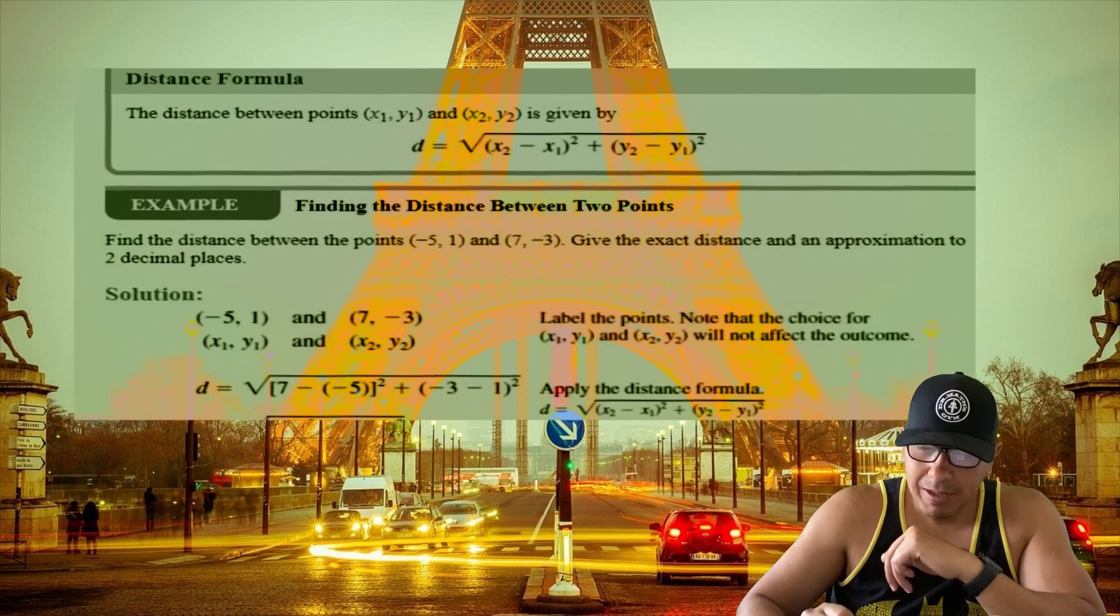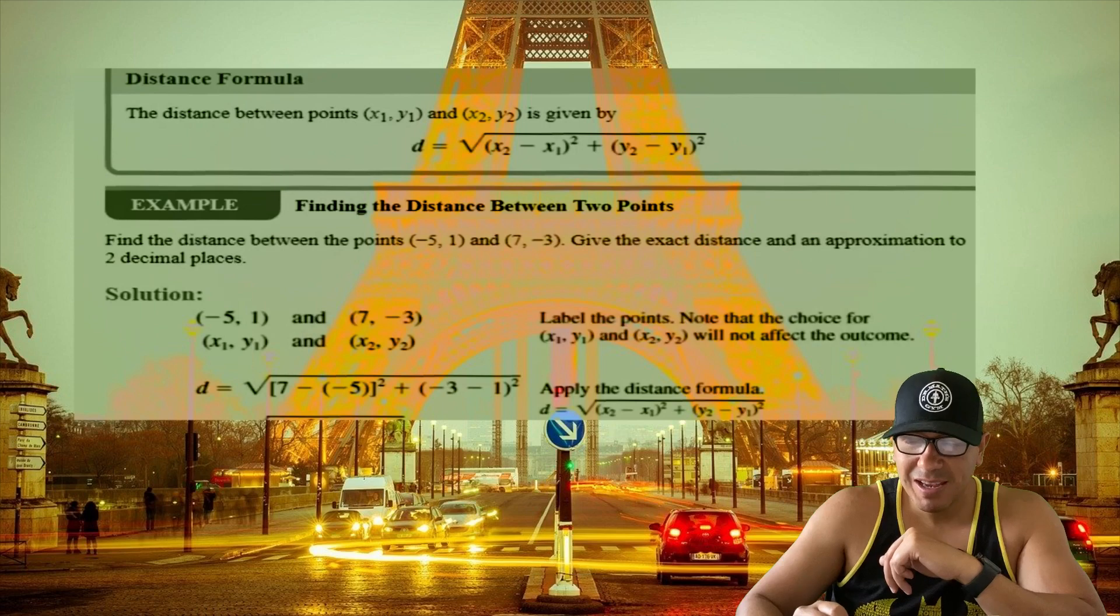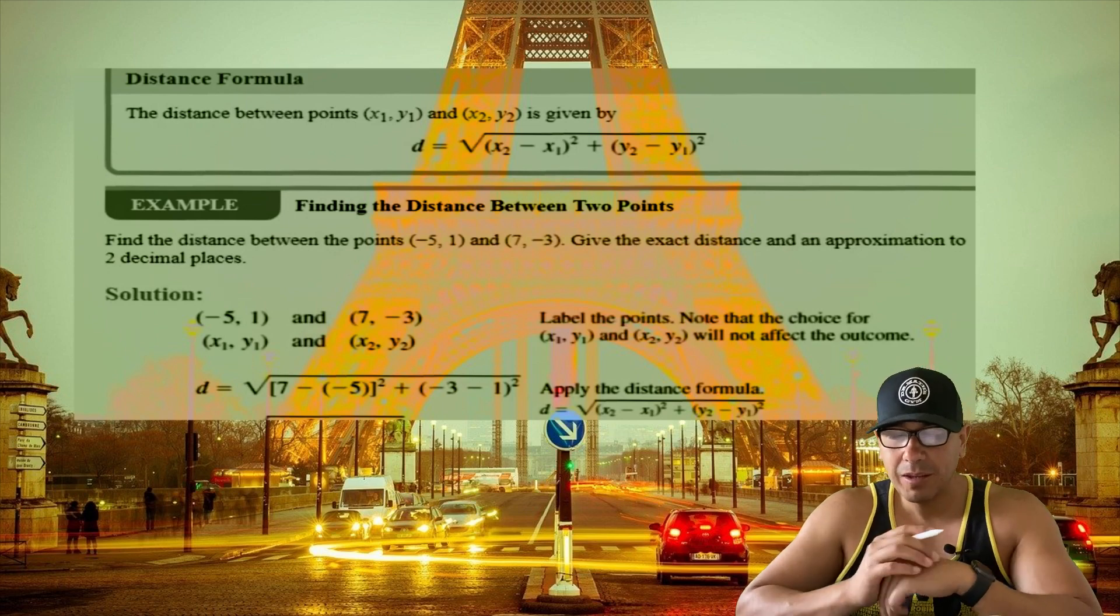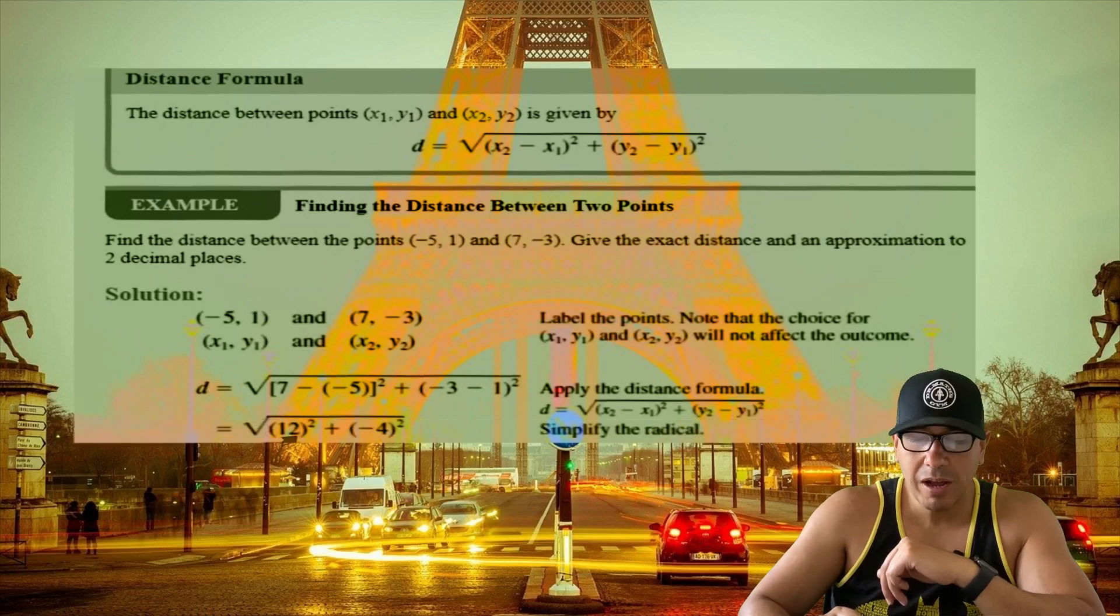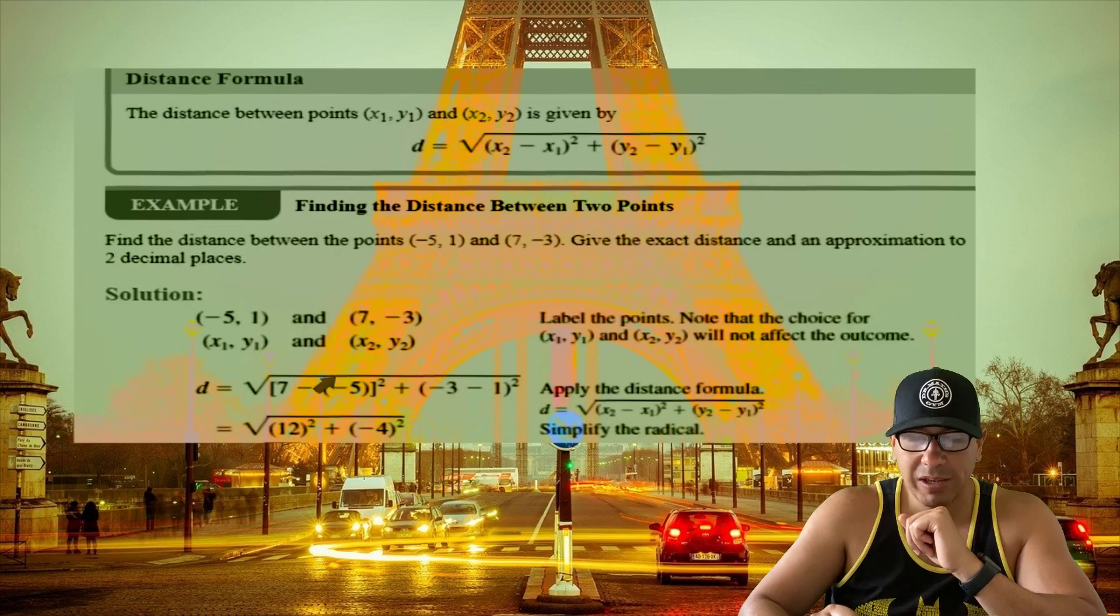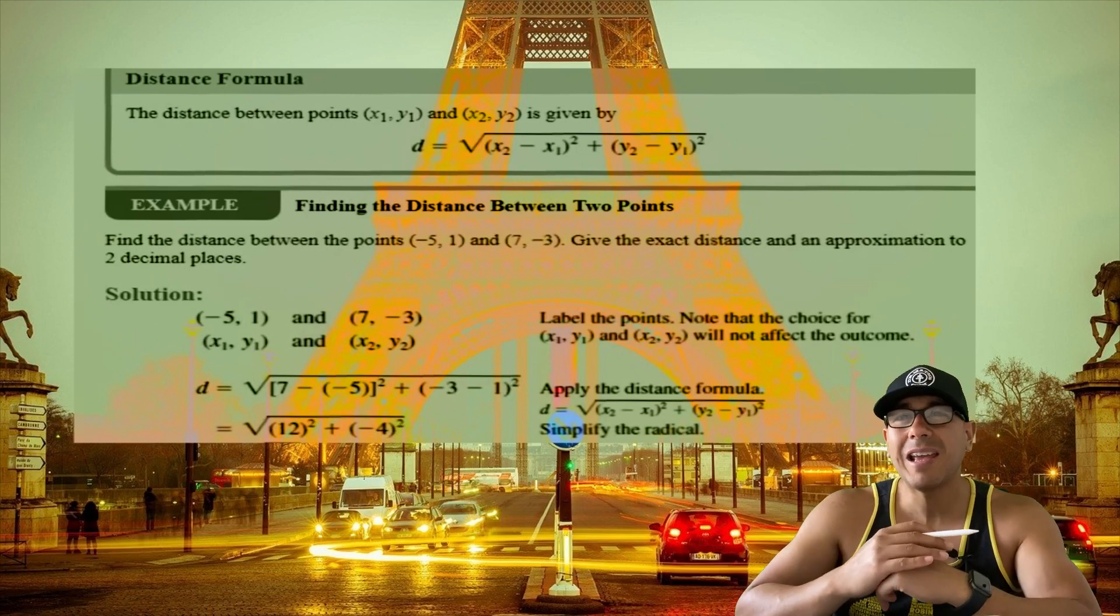We're going to take that quantity and square it. We're going to do the same thing with our y value, so this is y₂ minus y₁. All we're doing is applying the distance formula by plugging it in. When we simplify our first argument, we get 12 and we're going to square it. When we subtract -3 minus 1, we get -4 and we're going to square it. I like going step by step to make sure I don't make a mistake.